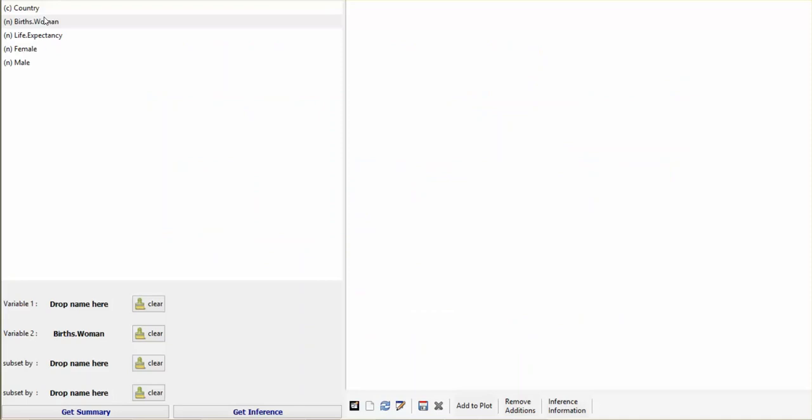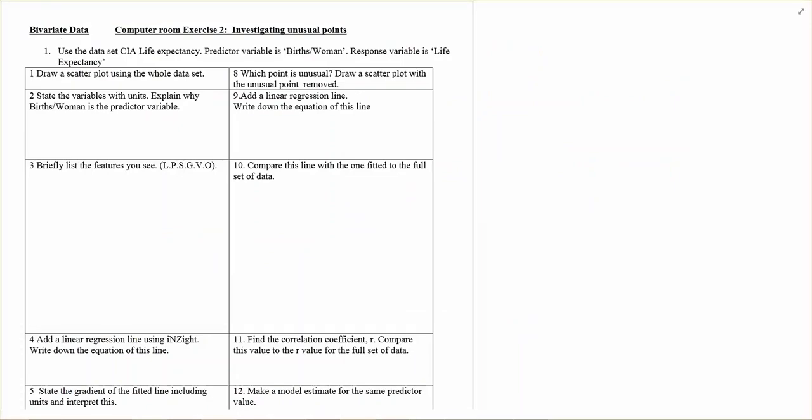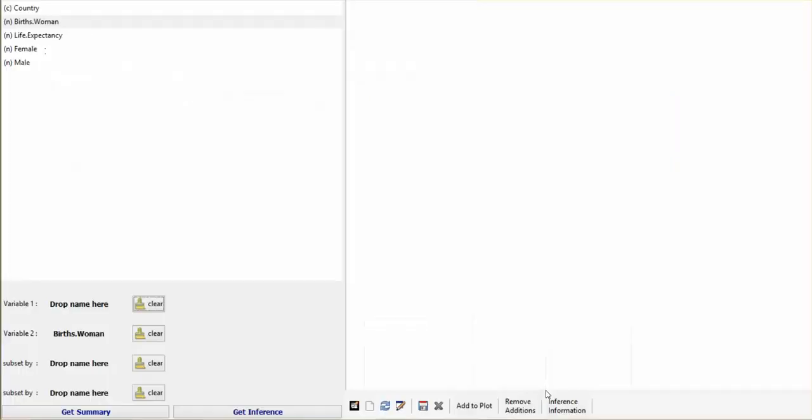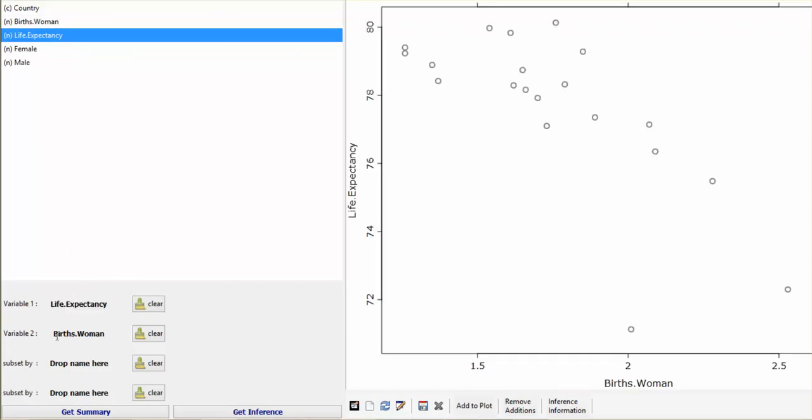So I've imported this data. My response variable is life expectancy, so it goes in variable one. And my predictor variable is births per woman, so that goes in variable two.